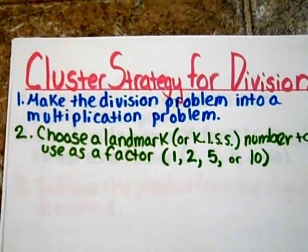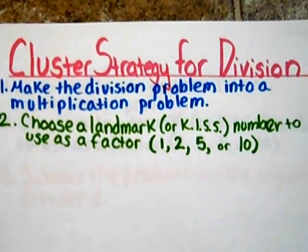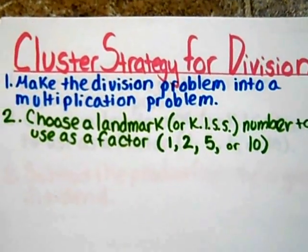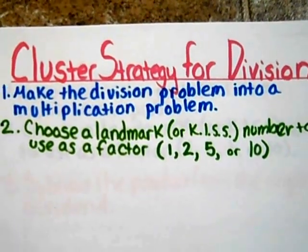The second step is choose a landmark or KISS number to use as a factor. Those numbers are one, two, five, or ten.